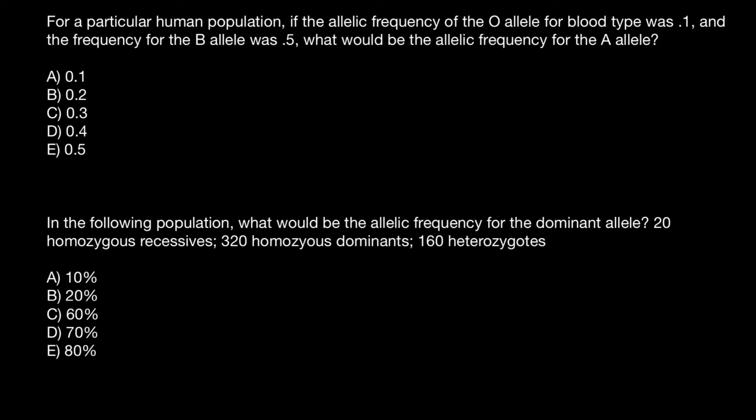Hello and welcome to Nikolai's genetics lessons and the first problem of the day. For a particular human population, if the allelic frequency of the O allele for blood type was 0.1 and the frequency for the B allele was 0.5, what would be the allelic frequency for the A allele?